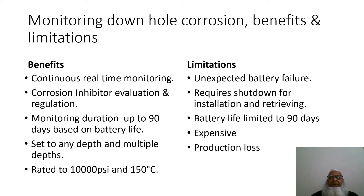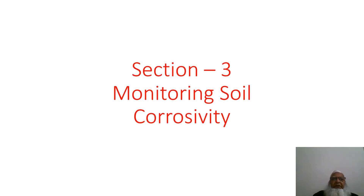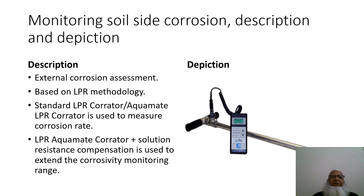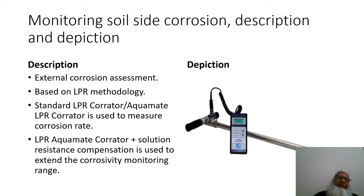Section 3 deals with monitoring soil corrosivity. External corrosion assessment is performed using LPR (Linear Polarization Resistance) methodology, which has been described in previous videos. Standard LPR equipment is used to measure corrosion rate, and LPR equipment with resistance compensation is used to extend the corrosion monitoring range. The right-hand side picture shows the equipment connected to the soil-site corrosion monitoring probe.